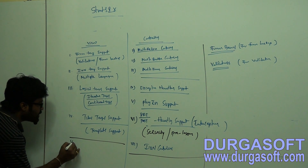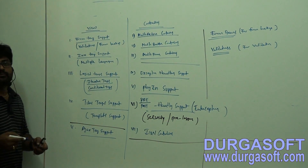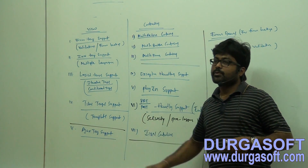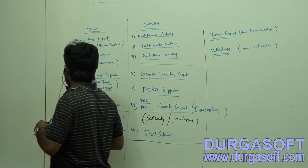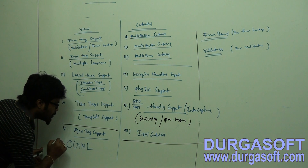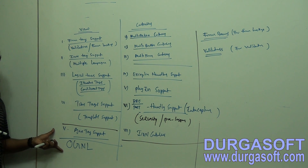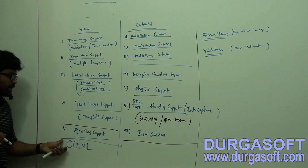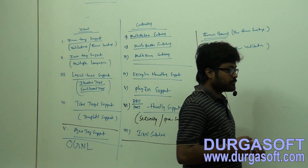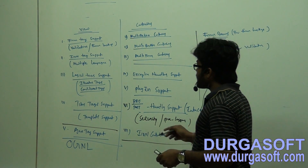Struts 2x also provides Ajax tag library support — an additional tag support not available in 1x. And for presentation pages, they provide OGNL (Object Graph Notation Language) support. So Ajax tag support and OGNL expression support are the two extra presentation features in Struts 2x.